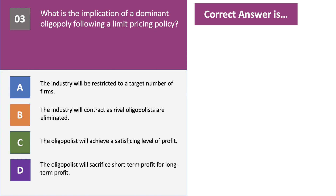A dominant oligopoly — a firm with significant market power — deciding to follow a policy of limit pricing. The answer is D: sacrificing short-term profit for long-term profit. Limit pricing is where you cut your prices in the short term to try to make entry by a potential rival firm unprofitable. You take a hit on short-term profits, but if your market share and market power restore themselves, you can make higher profits in the long term because you've kept your dominant position.